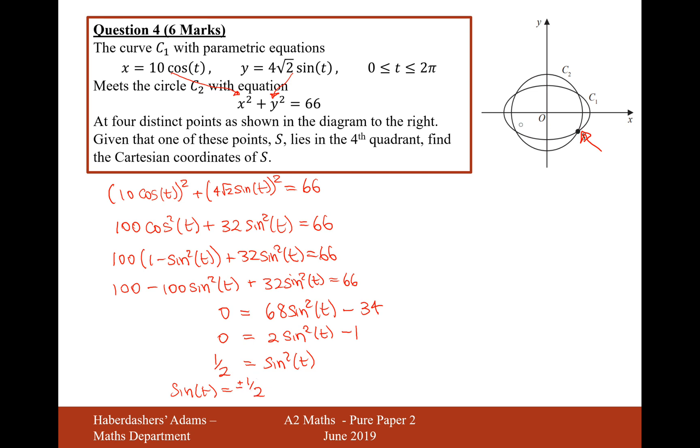So definitely, as s is in the fourth quadrant, sine t equals minus 1 over root 2. Not because it's negative, but because the equation, if I plug a negative number into my equation, it's going to give me a negative answer. So therefore, that's what I'm looking for.